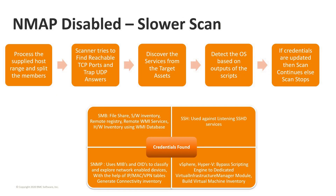When NMAP is disabled, the scan is relatively slower. The IP range is still processed, and the scanner tries to find reachable TCP and UDP ports. UDP answers are trapped and information updated on the scanner. Operating system detection is based on outputs of scripts remotely executed on target devices. If credentials are updated, the scan continues; if not, the scan stops. When credentials are found, it again uses SMB for Windows, SSH for Linux and Mac, and so on.